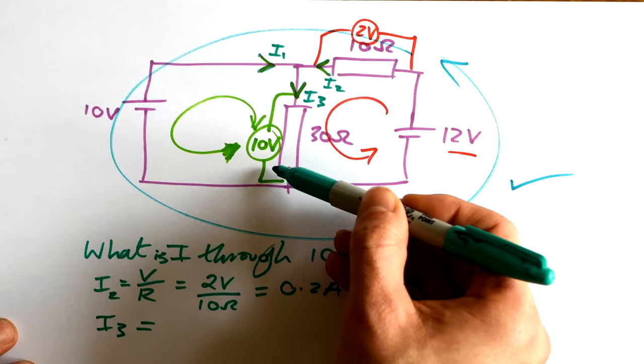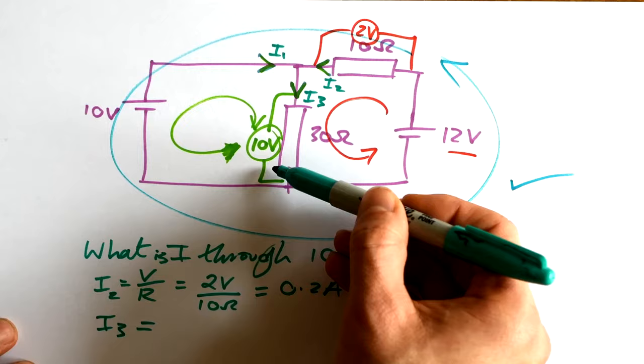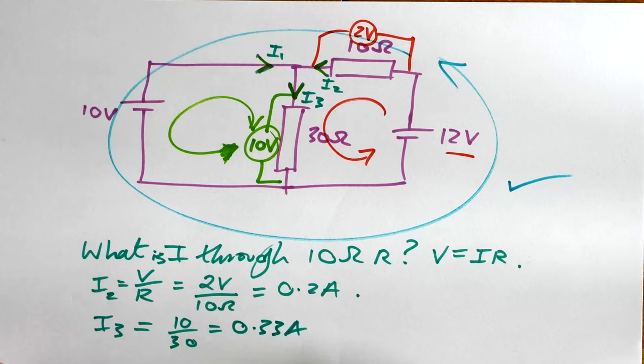Here we have current flowing through this resistor. Do we have a voltage? Yes. Do we have a resistance? Yes. So therefore we can just do 10 divided by 30, and so that gives us 0.33 amps.